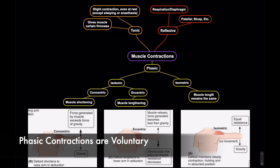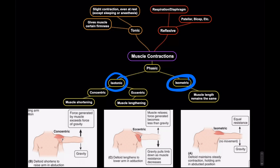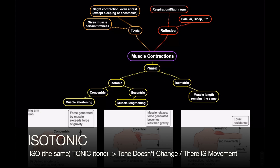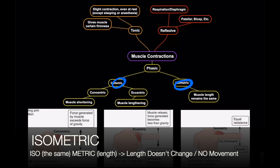Then you have phasic contractions, and this is what they like to ask on exams. You have two kinds of phasic contractions: isotonic contractions and isometric contractions. Isotonic means that the tone stays the same but the contraction produces movement. Whereas isometric means the length stays the same and there's no movement, even though there might be contraction.